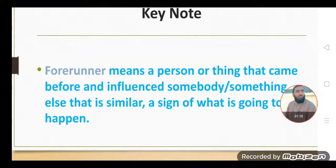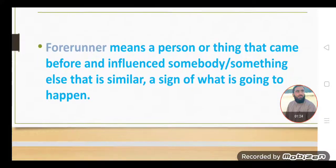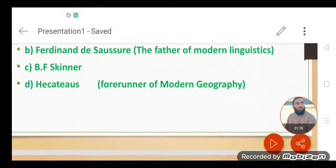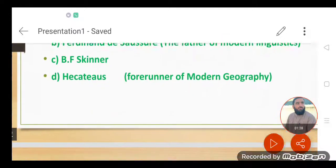What's meant by the forerunner? Forerunner means a person or thing that came before and influenced somebody or something else that is similar. A sign of what is going to happen. So the forerunner of semantics is Aristotle.